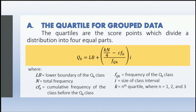In the quartile formula: n is the total frequency, cf sub b is the cumulative frequency of the class before the Qk class, f sub Qk is the frequency of the Qk class, i is the size of the class interval, and k is the nth quartile where it can be 1, 2, or 3.